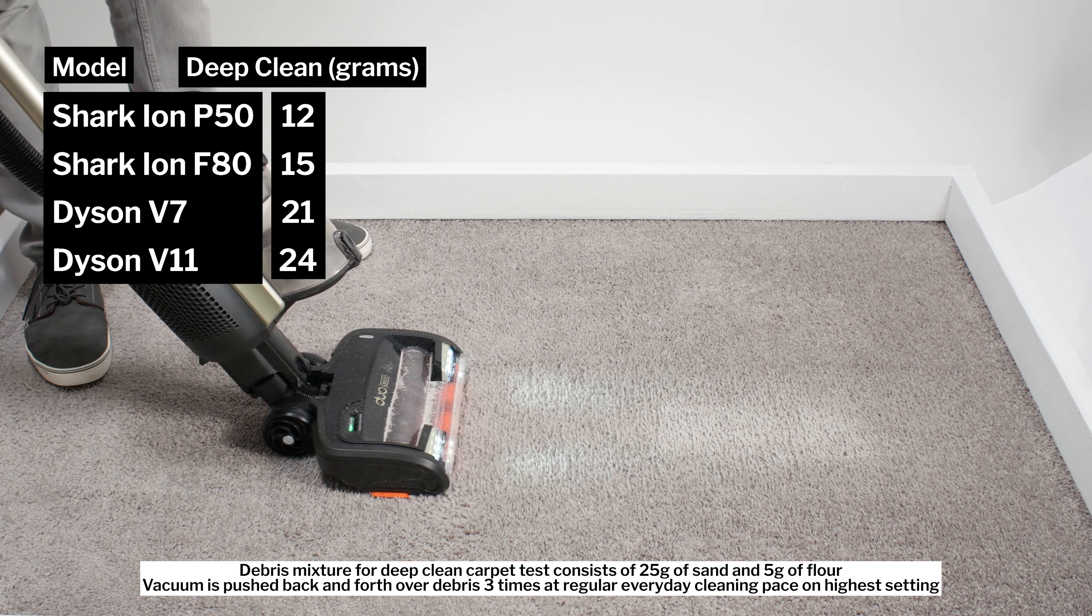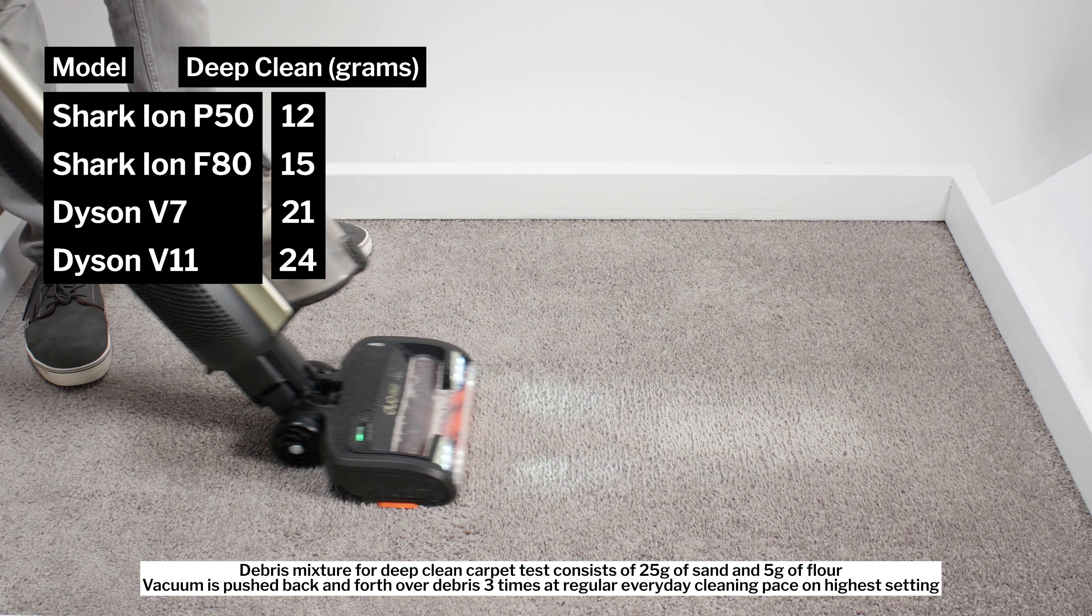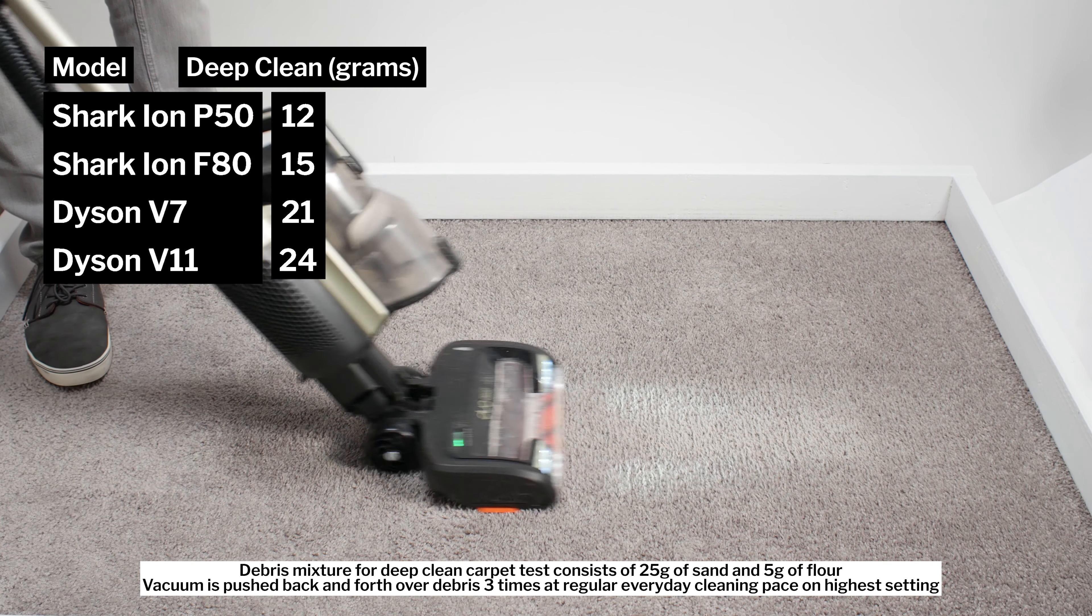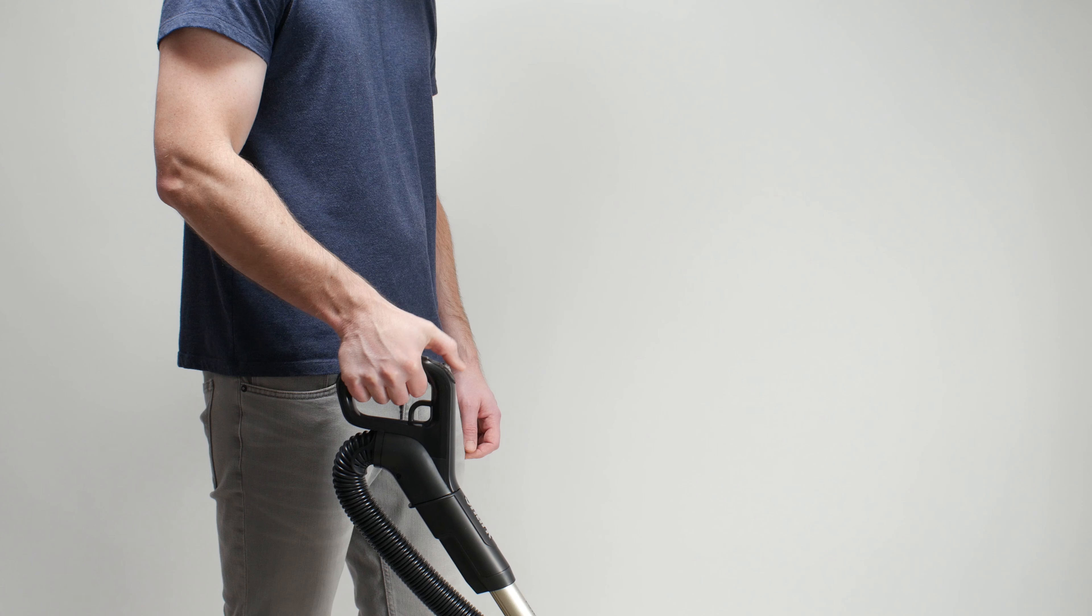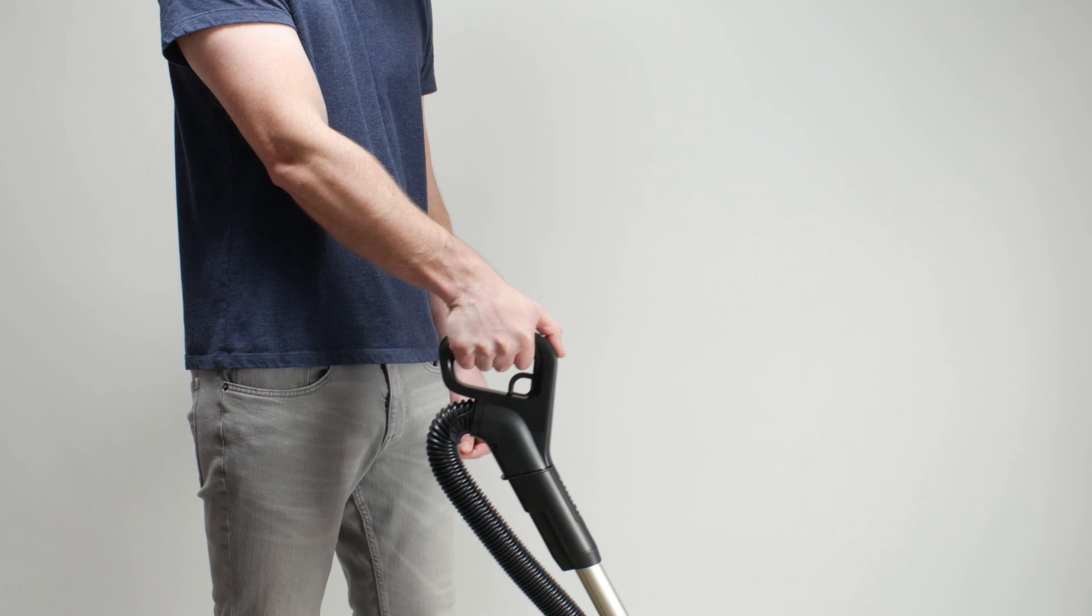Moving on to deep cleaning performance, the P50 picked up only 12 grams of debris after being pushed back and forth three times over an area of carpet embedded with 30 grams of fine debris. And that's with boost mode activated, a mode that requires you to hold the button down to keep that mode activated.